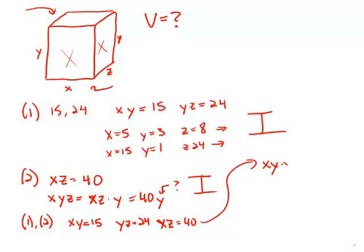x times y times y times z times x times z equals 15 times 24 times 40. Now, of course, I'm not going to multiply all that out. I'll just leave it like that. But notice what we get if we combine terms. We get x squared times y squared times z squared equals 15 times 24 times 40.